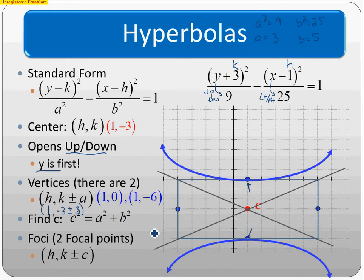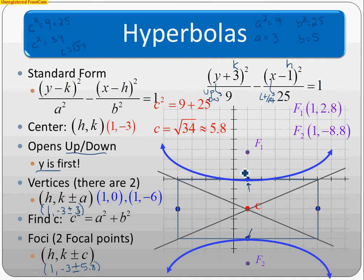We find focal points by adding and taking the square root. C²=9+25=34, so C=√34≈5.8. Using H=1, K=-3 plus/minus 5.8 gives two focal points: (1, 2.8) and (1, -8.8).